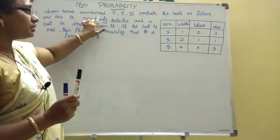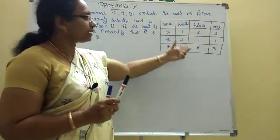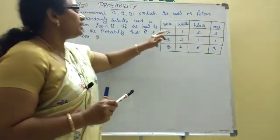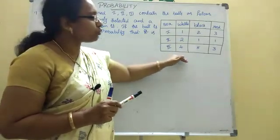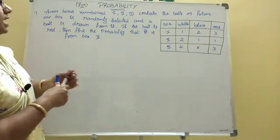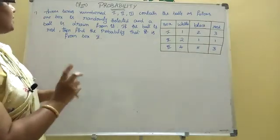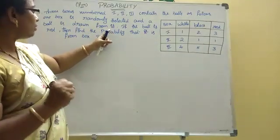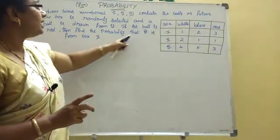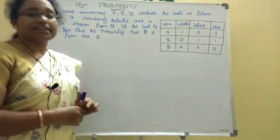Three boxes numbered one, two, three. The boxes contain balls as follows. Box one: white 1, black 2, red 3. Box two: white 2, black 1, red 1. Box three: white 4, black 5, red 3. One box is randomly selected and a ball is drawn from it. If the ball is red, then find the probability that it is from box two.